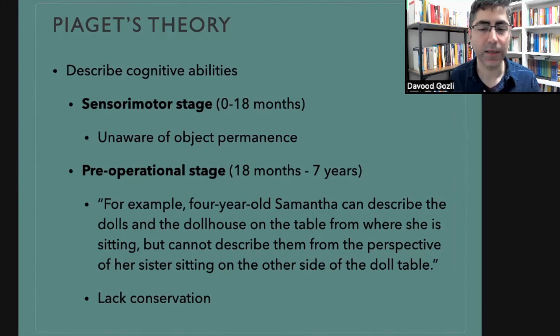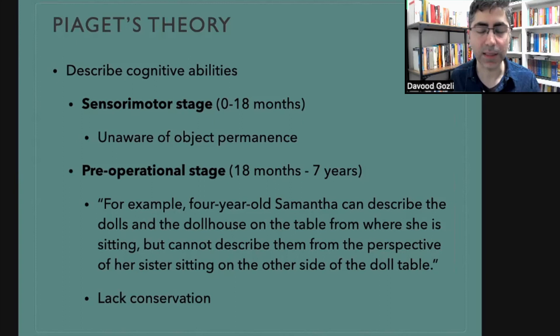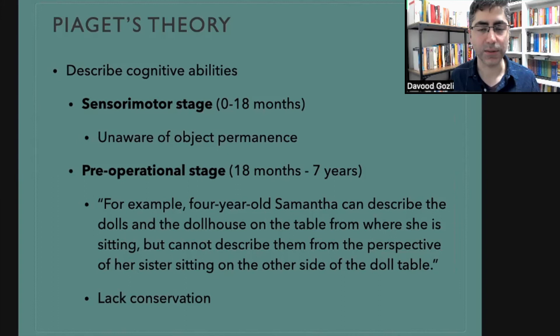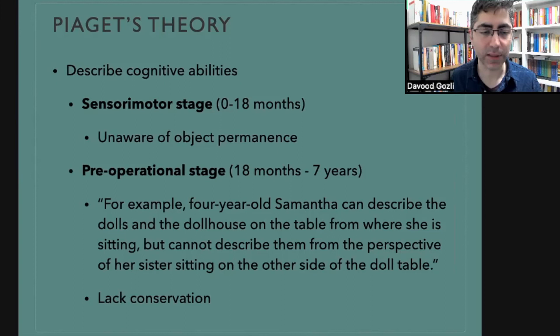Piaget's theory is divided into four stages, beginning with the sensorimotor stage. There is a theme in each stage — a fundamental way of relating to the world. In the sensorimotor stage, that way of relating is based on perceiving things and acting on objects. Assuming healthy development, by the end of this stage the child has a sense of what objects are, and learns that even when you are not looking at an object, when it is invisible for a time, it might still exist.